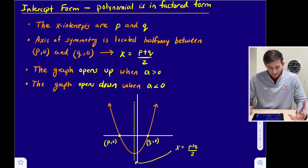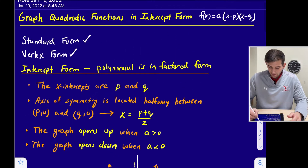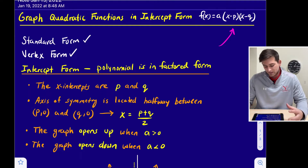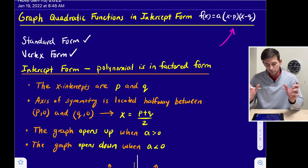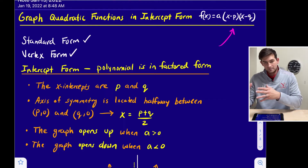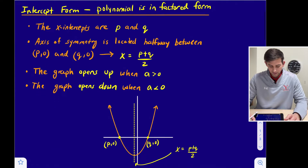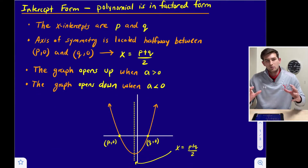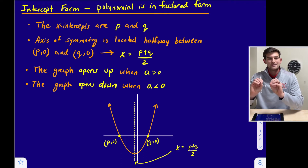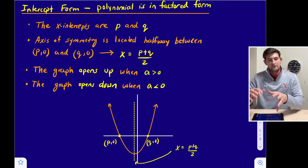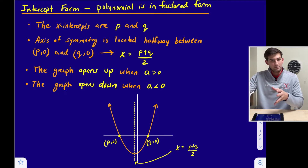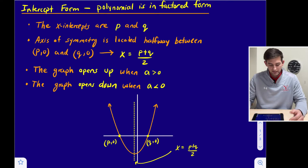Basically, what we're looking at here, the x-intercepts are p and q — those are just the variables we use. Here is our intercept form equation: f(x) = a(x − p)(x − q). It's called factored form because we have those two factors, (x − p) and (x − q). So p and q are the intercepts, and they're going to look opposite of what the equation says. For example, if we have x minus 2, p is 2. If we have x plus 3, q is negative 3, because minus a negative becomes a positive.